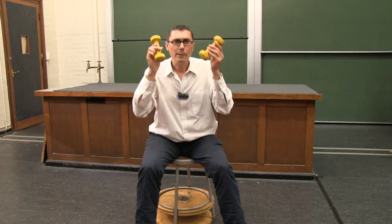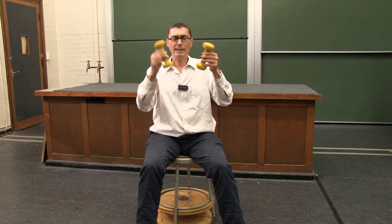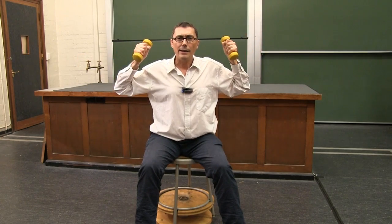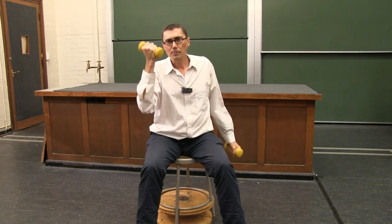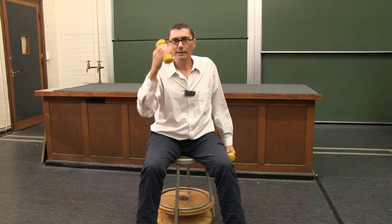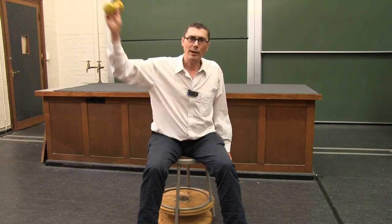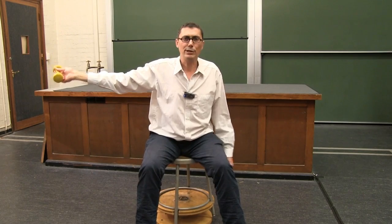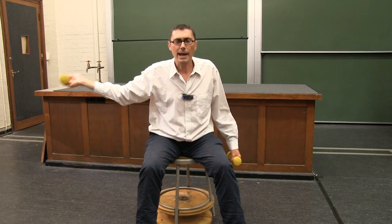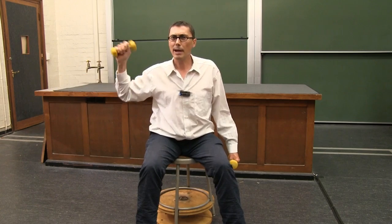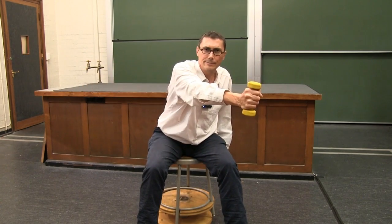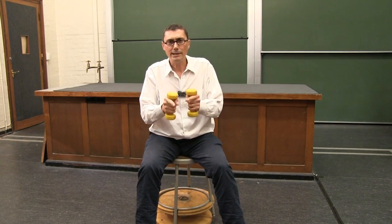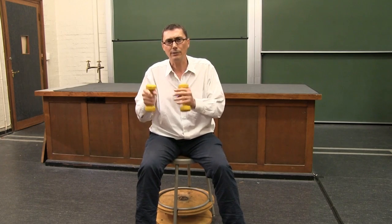Let's treat these weights as though they're point masses — forget the fact that they're a funny little shape, just treat them as though they're tiny little spheres. The angular momentum of a point mass is the mass of the object multiplied by the radius squared, multiplied by the angular velocity. We usually use the symbol omega. Angular velocity or angular speed is the amount of angle that it rotates through per second. So we have mass times radius squared times angular velocity: m r squared omega.